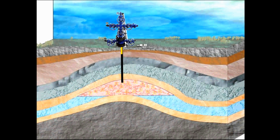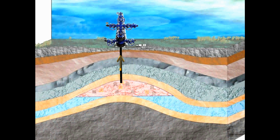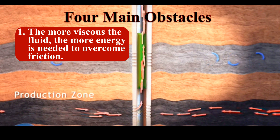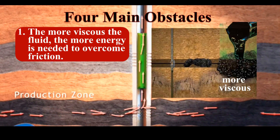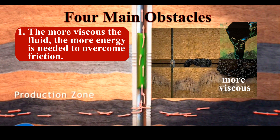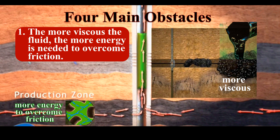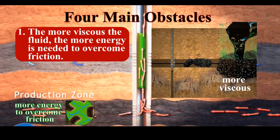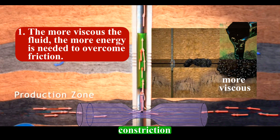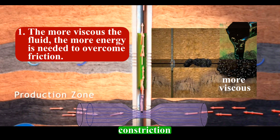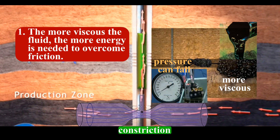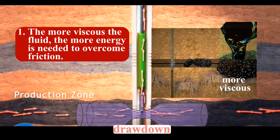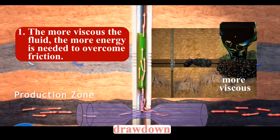What can cause natural lift to slow down and fail? There are four main obstacles. The first is encountered within the reservoir itself. The thicker and more viscous the fluid, the more energy is needed to overcome the friction to push the fluid through the rock matrix and wellbore. Over time, this friction coupled with constriction that reduces fluid volume can cause the pressure at or near the wellbore to drop in what is known as drawdown. Drawdowns are accelerated when production rates rise and when fluids become more viscous.